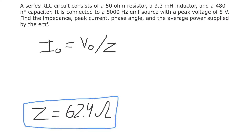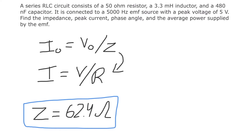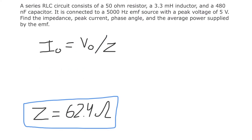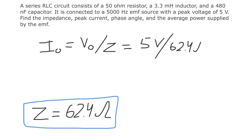We have to use the impedance to account for all components' net resistance, and we use the peak voltage since we're finding the peak current. Plugging in: the peak current equals 5 volts divided by 62.4 ohms, which gives a peak current of 0.08 amps.